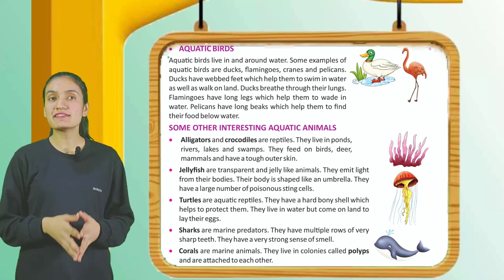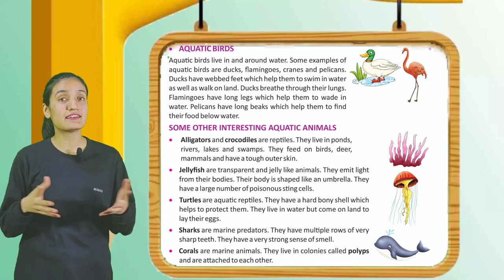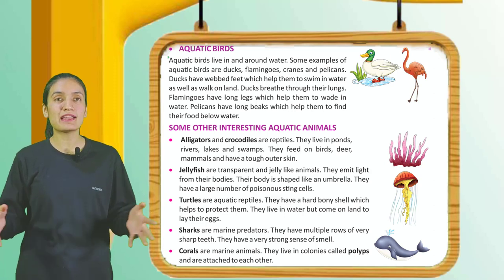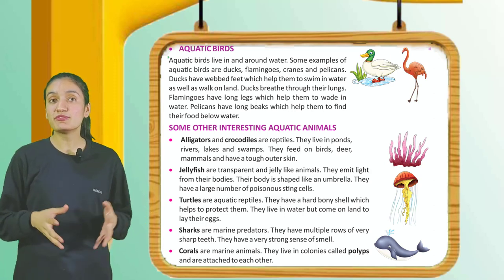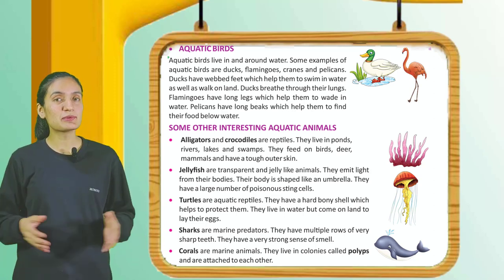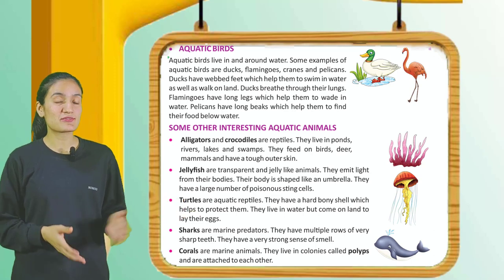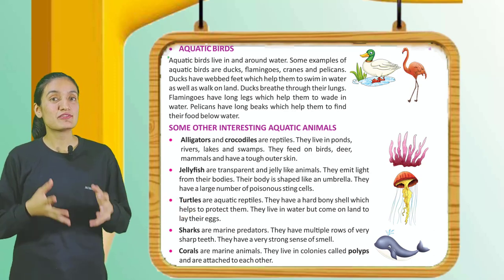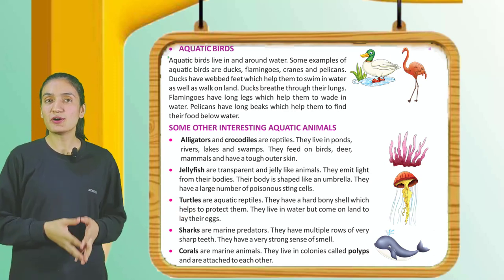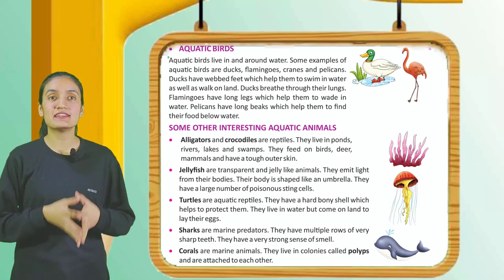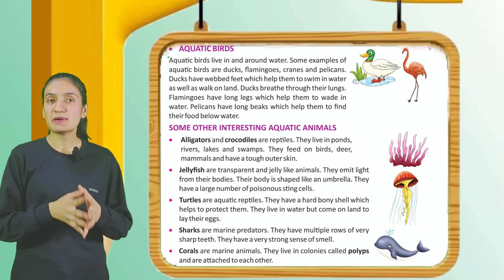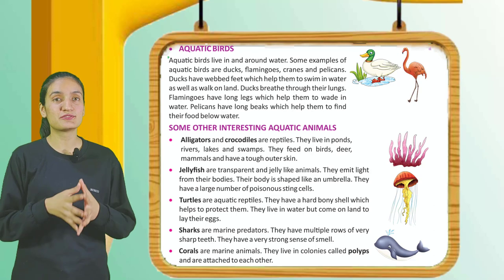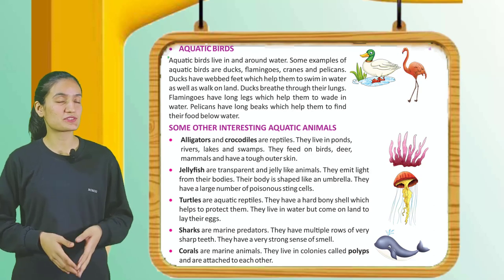Aquatic birds: Aquatic birds live in and around water. Some examples are ducks, flamingos, cranes, and pelicans. Ducks have webbed feet which help them to swim in water as well as walk on land. Ducks breathe through their lungs. Flamingos have long legs which help them to wade in water. Pelicans have long beaks which help them find food below water.